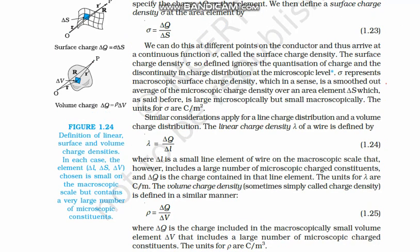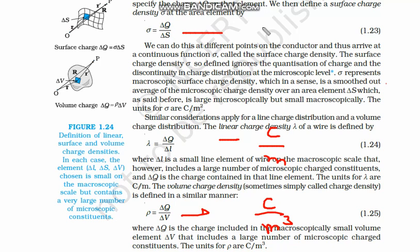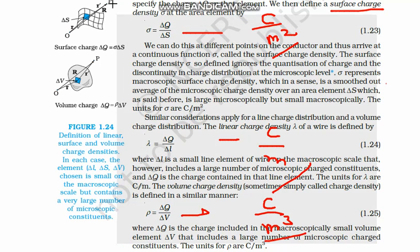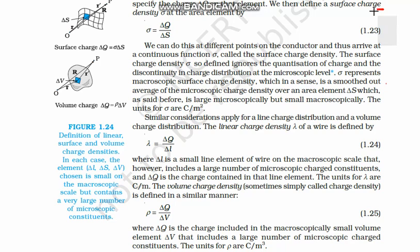Now for the units of these charge densities: volume charge density rho has units of coulombs per meter cubed. Linear charge density lambda has units of coulombs per meter. Surface charge density sigma has units of coulombs per meter squared. These are the units of the three charge densities.